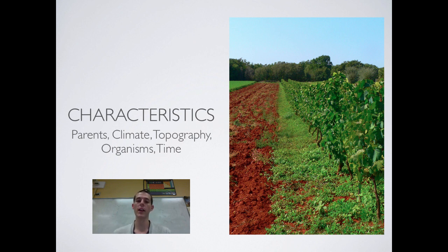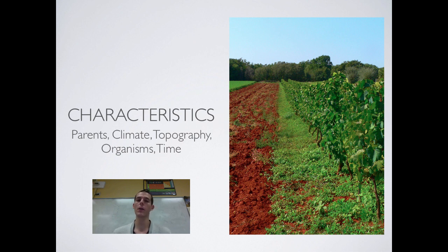Also, topography — the shape of the land. Soil on sloped lands like a hill probably isn't going to be as deep because it's regularly going to be washing and eroding down into the valley. But in the valley, where all that soil collects, you could have really deep, nice, fertile soils. You've got the organisms that live in the soil as well. And then time — the longer soil has been around, generally the more fertile it's going to be. However, over time, if you've had a lot of crops grown on that soil, most of the nutrients could have been taken out. So all five of these characteristics are going to help determine the qualities of your soil.